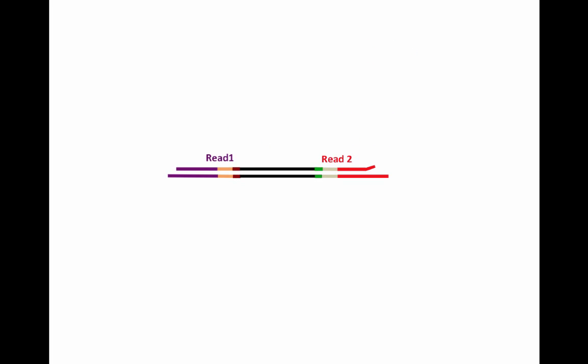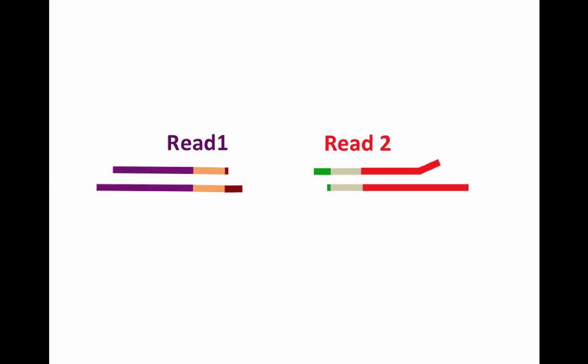We then ligate two different adapters that each have a compatible cohesive end specific to the restriction enzymes used. Thus, only fragments with the two different cut sites will receive both kinds of adapters. These adapters will serve as primer binding sites for Illumina sequencing and the inner tagging sites for quadruple indexing. We will refer to these adapters as the READ1 and READ2 adapters. The READ1 adapter is made up of the READ1 sequencing primer binding site, an inner barcode called a tag, and the cut site including the compatible cohesive end.